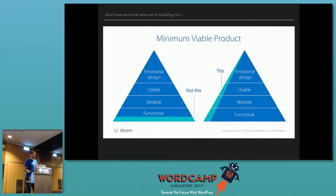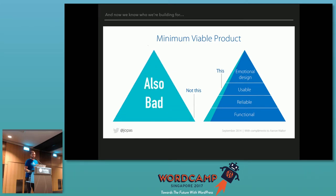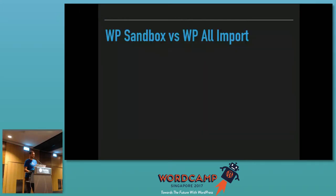An MVP should look like this: you build one feature and it needs to be functional, reliable, usable, and very well designed. If you focus on too many things in the beginning, you're probably going to build something that does 10 things really poorly and is barely functional, and you're going to get really bad feedback. Instead of people telling you what they want you to build, they're going to be telling you that what you built doesn't work. So pick that one thing and just do that really well.